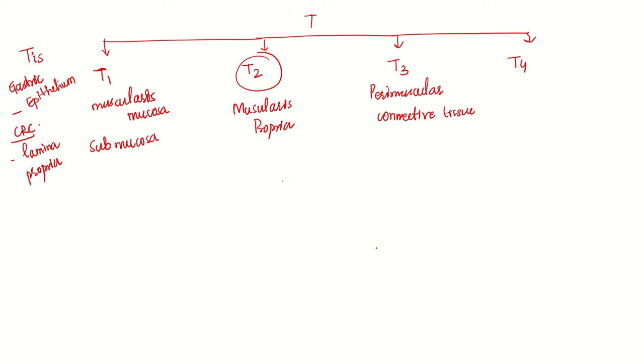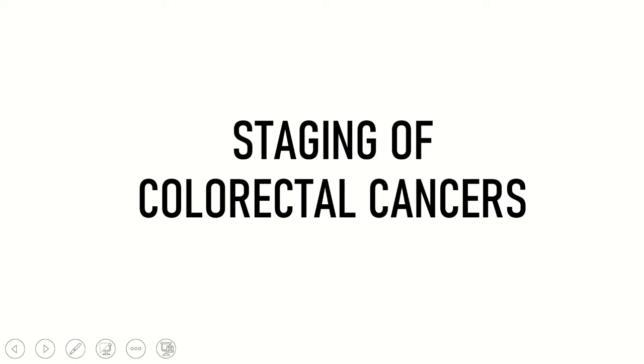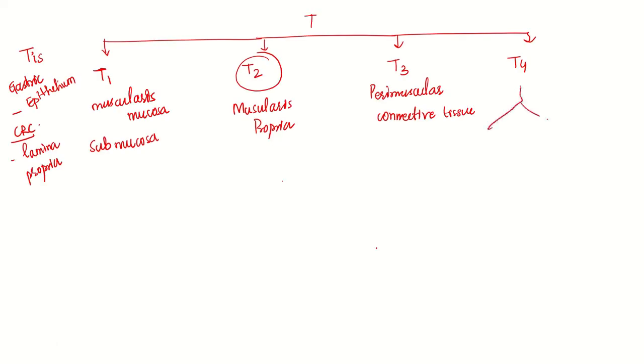T4 is further divided into T4a and T4b. T4a is breach of serosa, that is perforation. T4b is invasion into adjacent structures. The adjacent structures could be peritoneal wall, direct invasion—not metastasis—it is direct invasion.